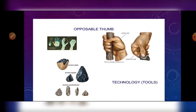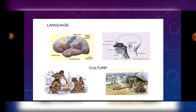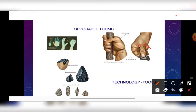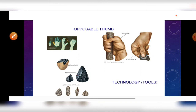Next is the opposable thumb — having a free grasping hand — which also differentiates human beings from ancestors. We have an opposable thumb used for making weapons, writing, painting, and playing instruments. This is because fingers have become slightly shorter and the thumb is fully opposable, allowing us to write, paint, play instruments, and use weapons.